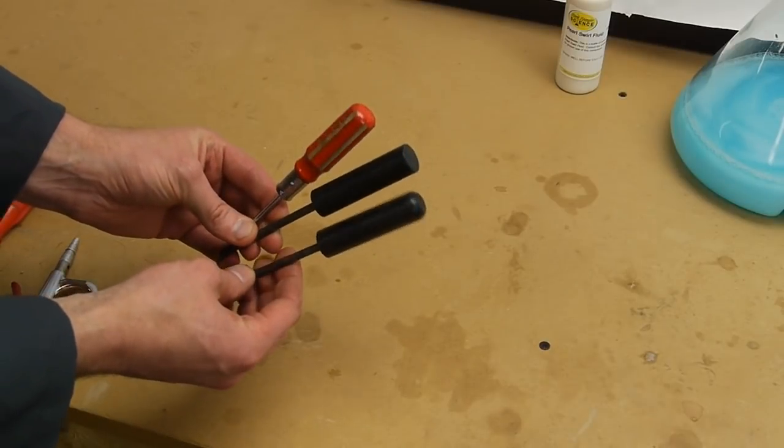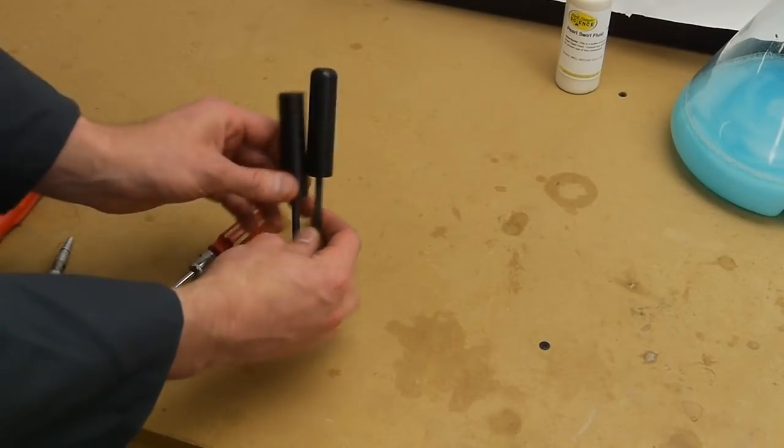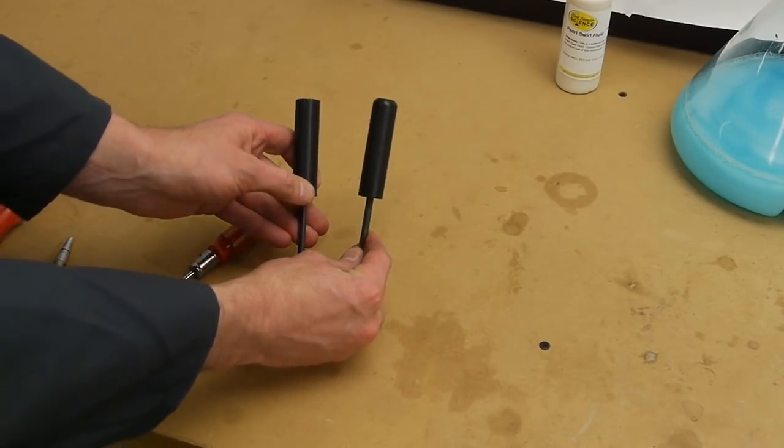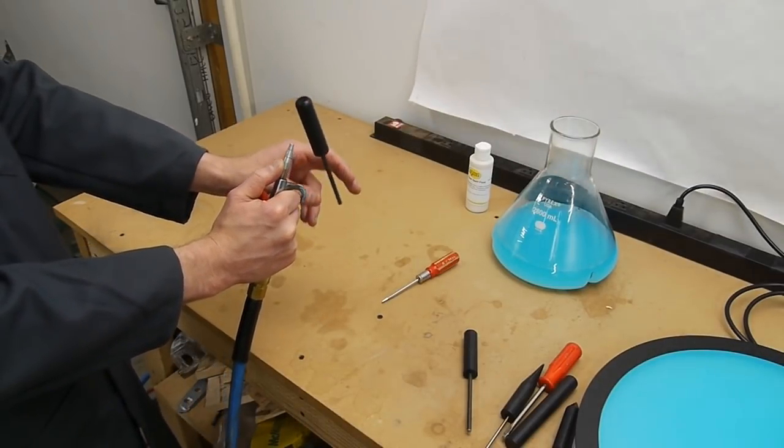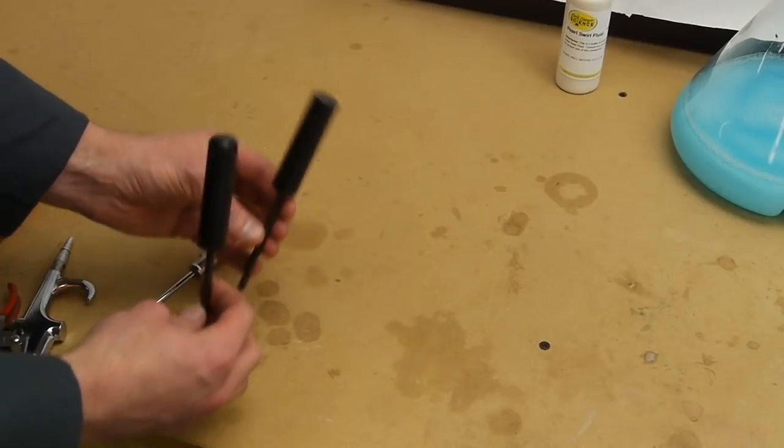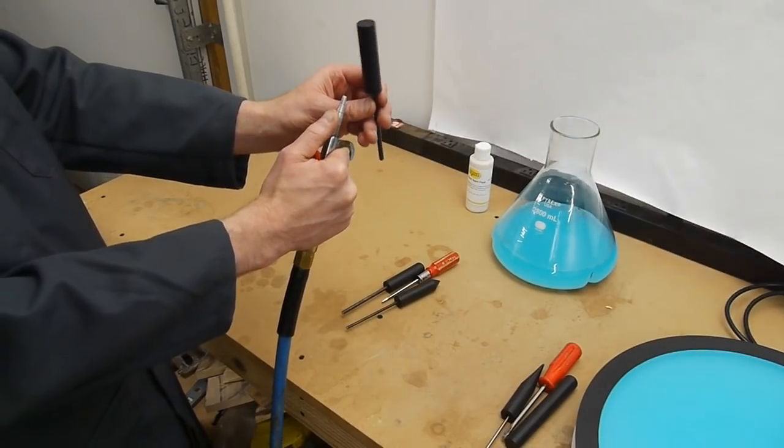So I made another fake screwdriver and this one actually has a rounded top. So you can see one of these is square cut and the other is rounded and I turned both of these on the lathe. This one floats just fine and this one doesn't float at all. It falls no matter what you do to it.